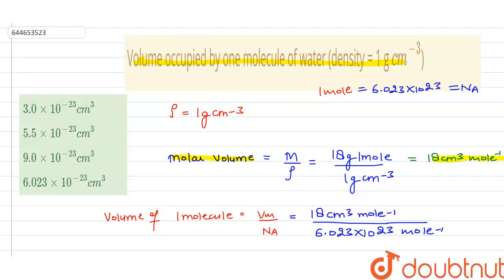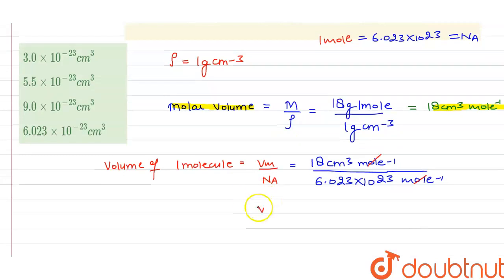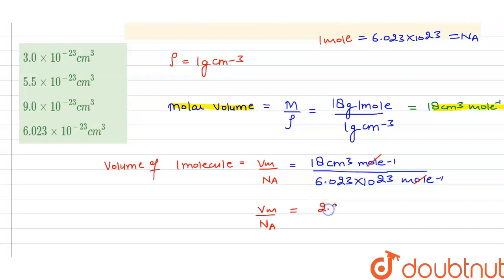From this we can say that the mole inverse and mole got cancelled out. On solving, we get the volume of one molecule of water as 2.989 × 10⁻²³ centimeter cube, which can be written approximately equal to 3 × 10⁻²³ centimeter cube.